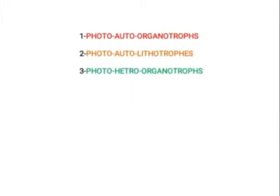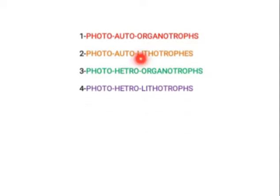Photo-hetero-organotrophs get energy from light but do not do CO2 fixation, and they use an organic compound as the source of electrons in the electron transport chain. Photo-hetero-lithotrophs get energy from light but do not do any CO2 fixation, and as lithotrophs they use an inorganic compound as the source of electrons in the electron transport chain.